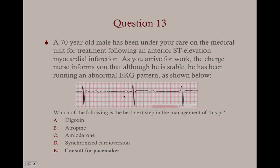Digoxin is used for atrial fibrillation. Atropine we'd keep ready but wait unless the patient becomes unstable. Amiodarone is for ventricular tachycardia. Synchronized cardioversion won't work for a conduction system lesion — cardioversion is better for VTAC or PSVT. A third degree AV block is an absolute indication for a pacemaker, so you definitely want to consult for pacemaker.